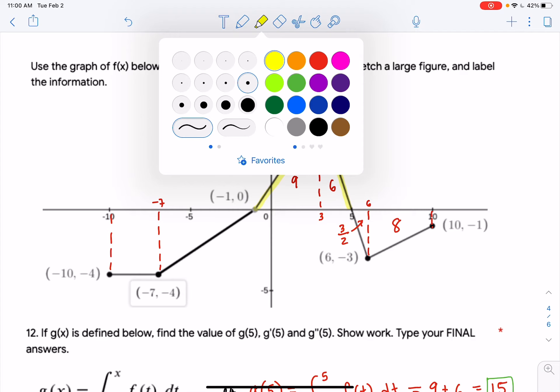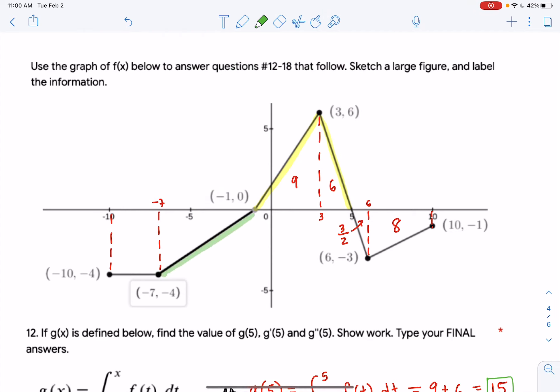Well, let me do it in green. f is increasing from here to here and here to here. And then finally, there to there.